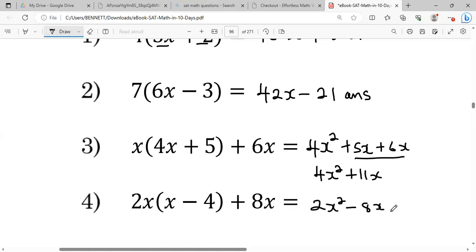And then we put by the plus 8x. Of course, these are the only like terms. This term is different because of the square. So it will be 2x².